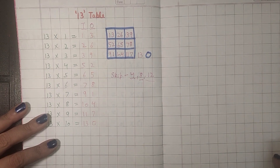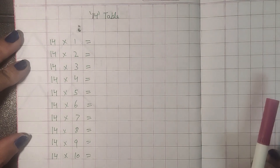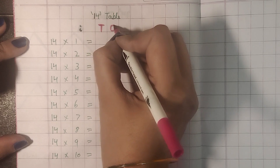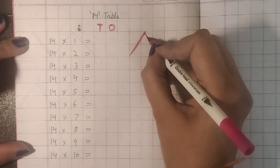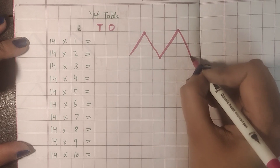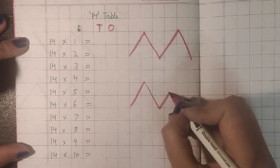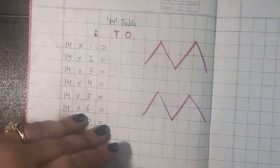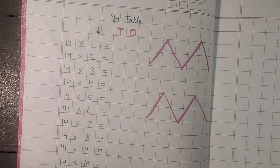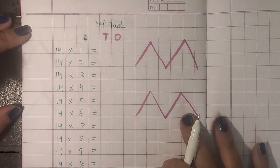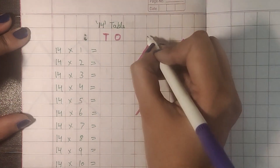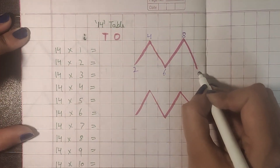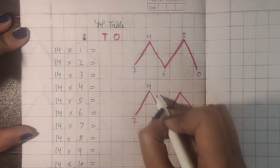Now we move forward to the 14 times table. For the answers, we will write the tens and ones columns and draw two M-shaped structures. We write the table of 2 up to 2 times 4 for the ones place: 2, 4, 6, 8, then place a 0. We repeat the same process for the second M.